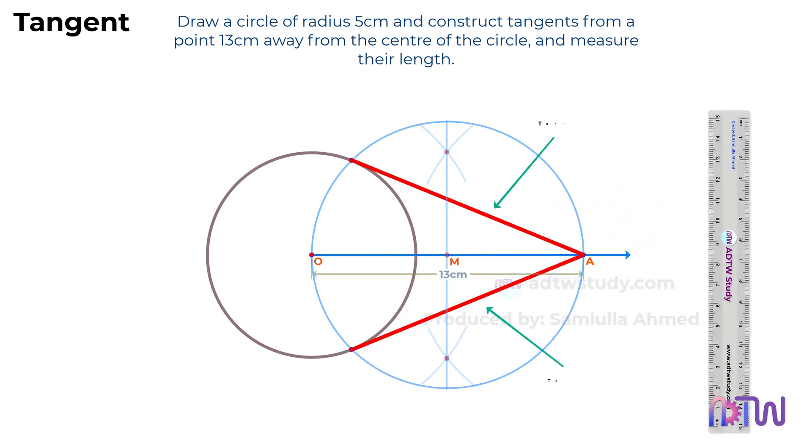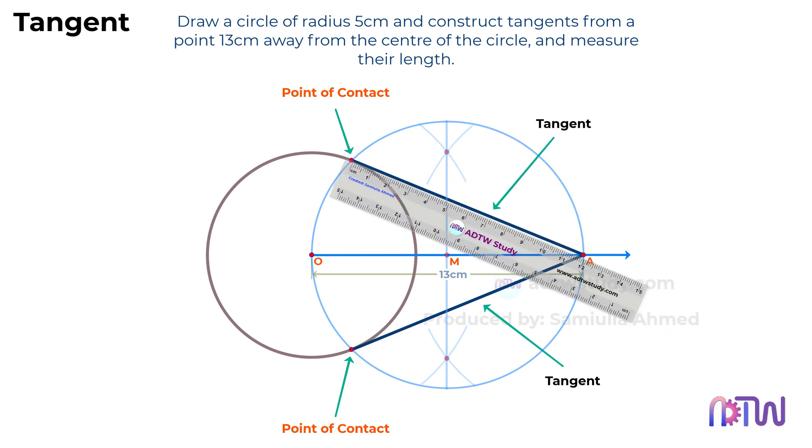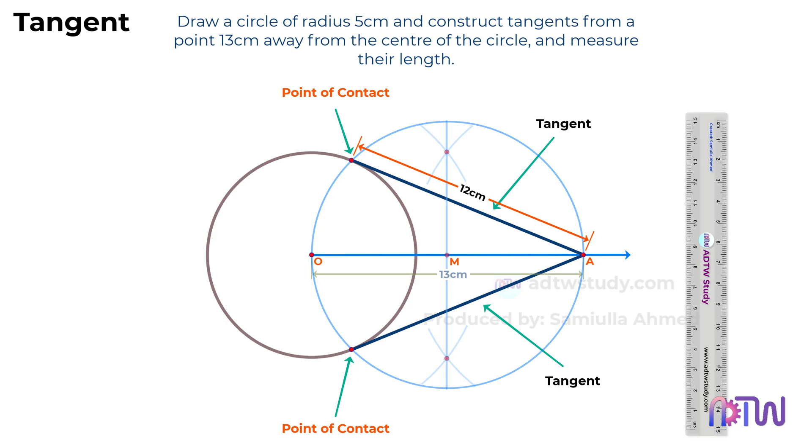These two lines are the tangents. Now measure the lengths of the tangents as shown. Therefore, the length of the tangents is 12 centimeters. This is the method we use to draw tangents from an external point.